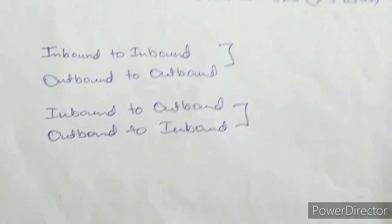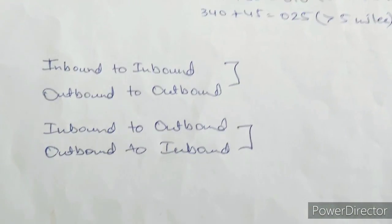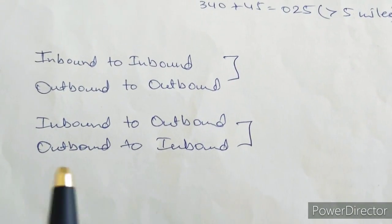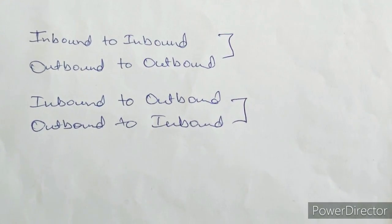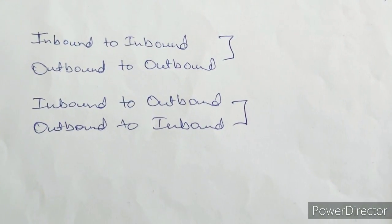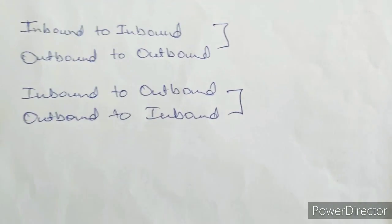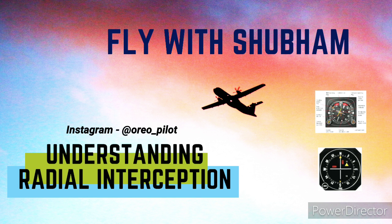After all of this, we know that inbound to inbound and outbound to outbound have almost the same procedure — whichever side you are turning, the heading correction will be towards that same side. But for inbound to outbound and outbound to inbound, it is the opposite — whichever direction you turn, the heading correction is in the opposite direction. Try out a few examples by yourself to understand these concepts better. If you have any queries, you can reach me on Instagram at oreo_pilot, and don't forget to subscribe.